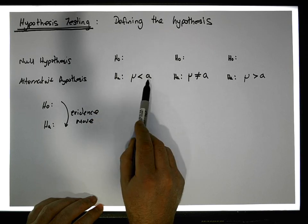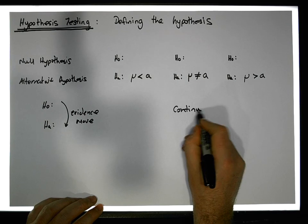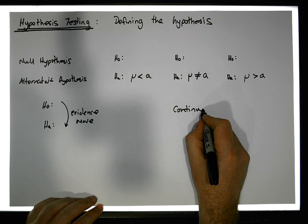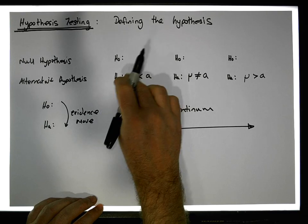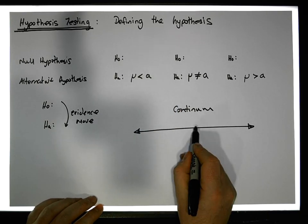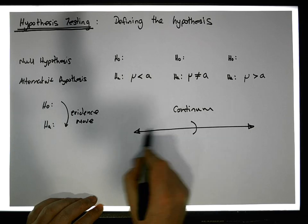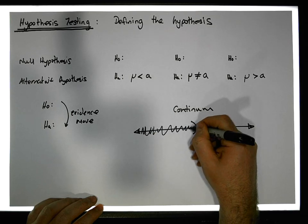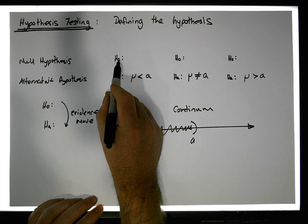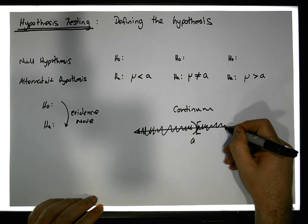Either way, a hypothesis has a null and an alternative position. From a continuum perspective, the null and the alternative need to cover the whole continuum. So in this case, if the population parameter is less than a value — that's an open interval — it could be somewhere in here, which means the null must consider all values greater than or equal to that value.